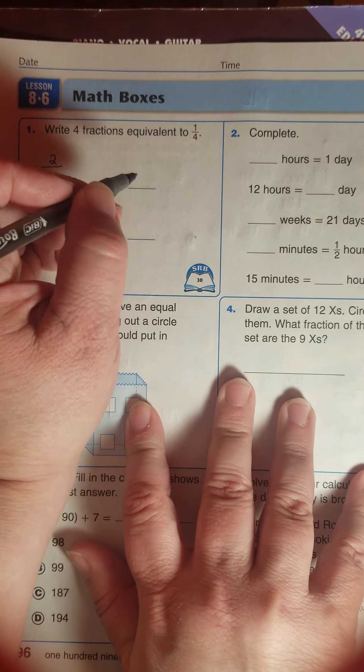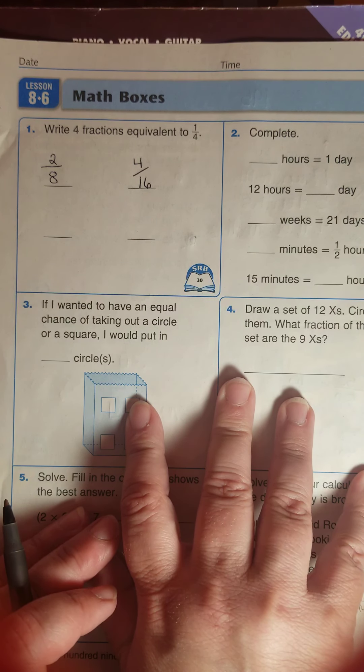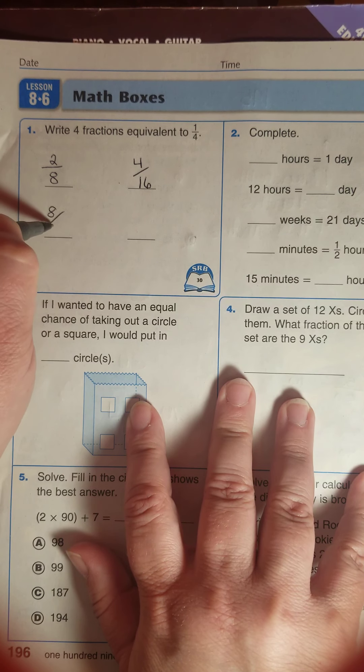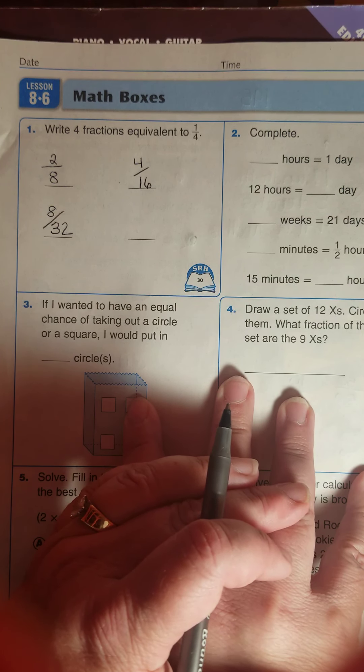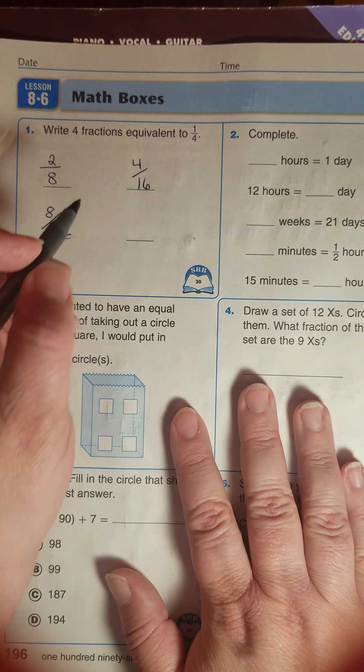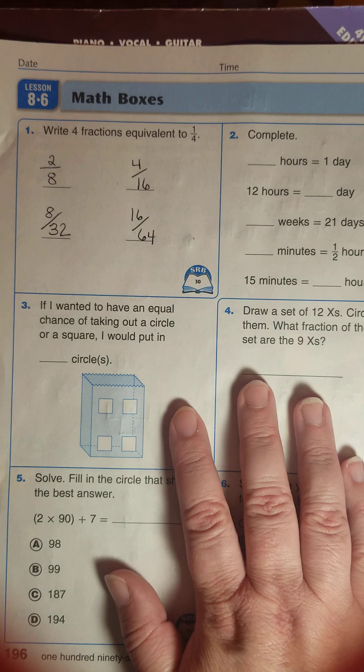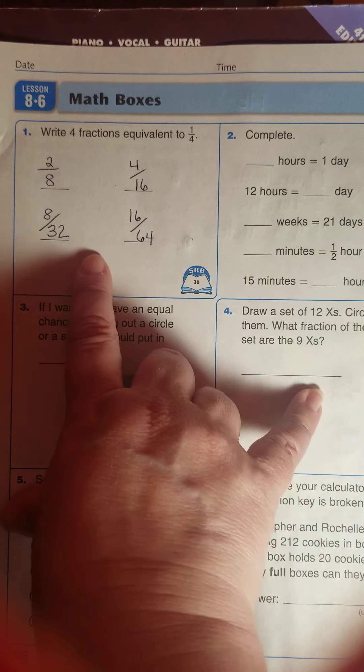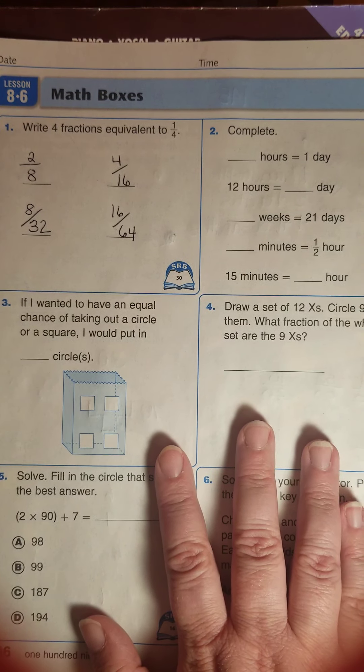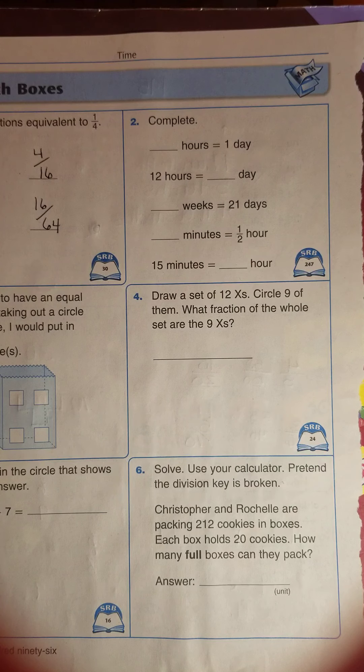Now what if I took that and I doubled it again? Two-eighths would actually be equivalent to four out of sixteen. And four times two is eight and sixteen times two is thirty-two. Eight out of thirty-two would be equal to one-fourth as well. And if I did it one more time, eight times two is sixteen and thirty-two twice is sixty-four. I just used some multiplying to come up with some equivalent names.